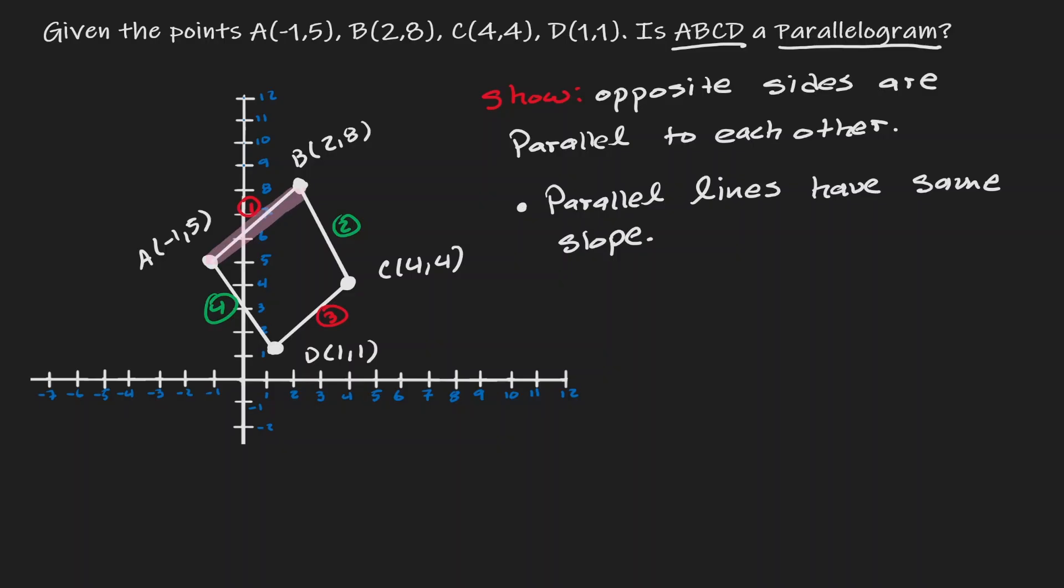Side one and side three are opposite from each other. Now let's calculate the slope for each one of them individually and see if they have the same slope.